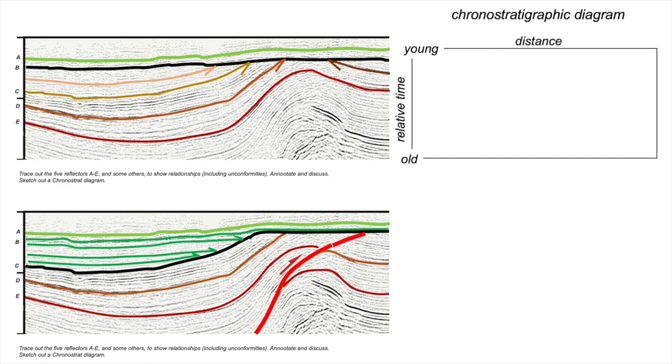If we put our green horizon, horizon A, on our chronostratigraphic chart, it plots here towards the young end of things. Now simply, let's just report back the other horizons, putting them horizontally because they represent an instant in time and showing their extent across the profile like this. The deepest horizon shown in the deep red goes right across the profile. The other horizons terminate and they terminate against the unconformity, shown by that half arrow head again.